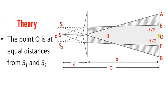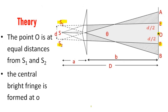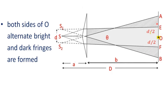The point O is at equal distances from the virtual sources S1 and S2. The distance S1S2 is d, so EO equals d/2 and OF equals d/2. The central bright fringe is formed at O, and on both sides of O, alternate bright and dark fringes are formed in the region between E and F.